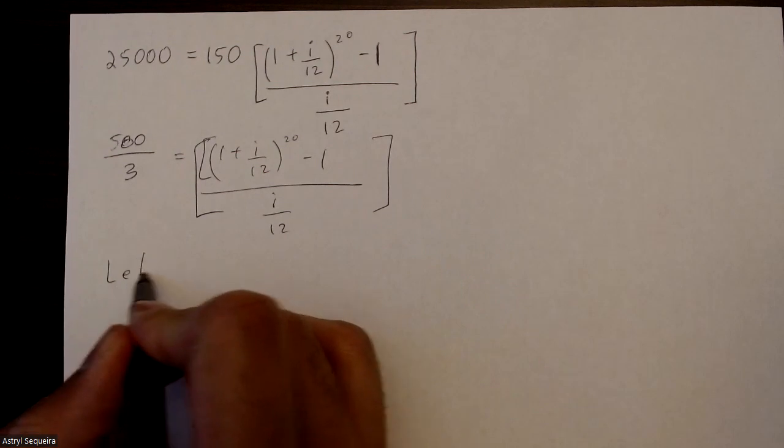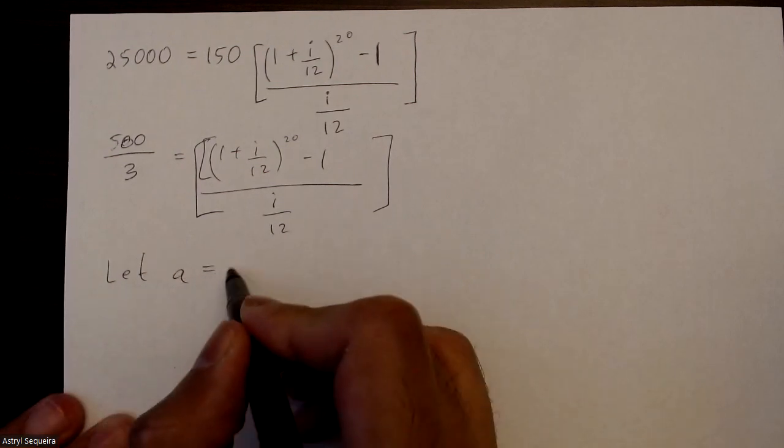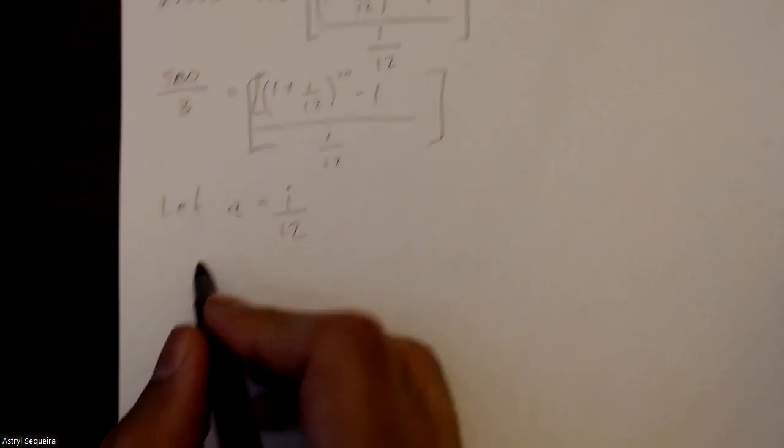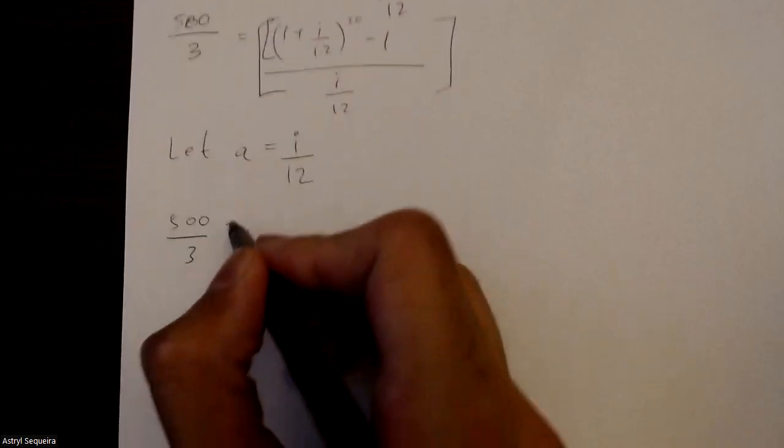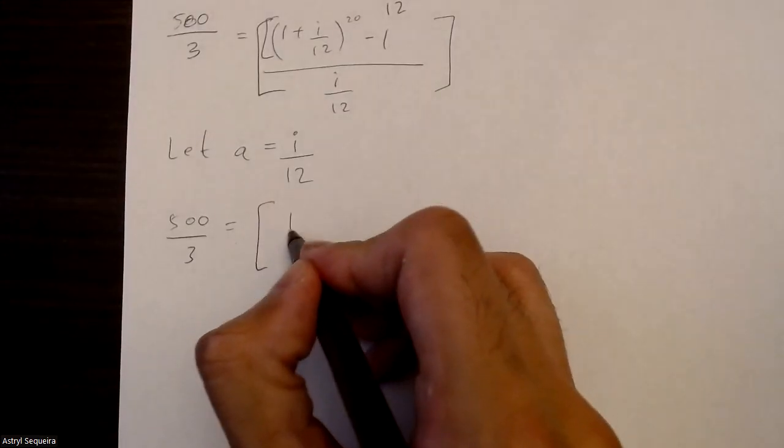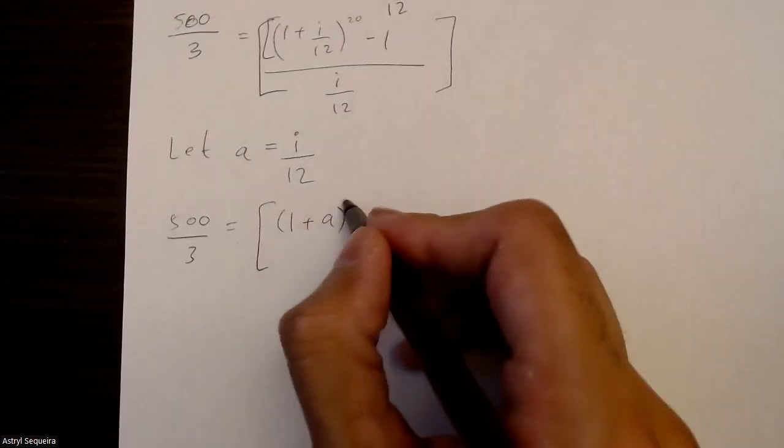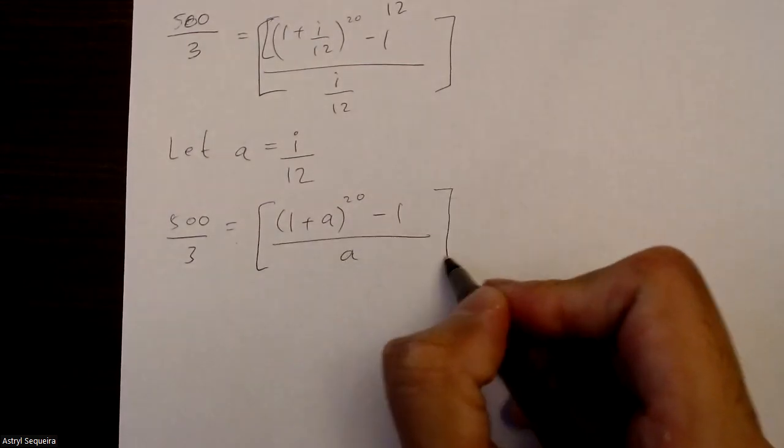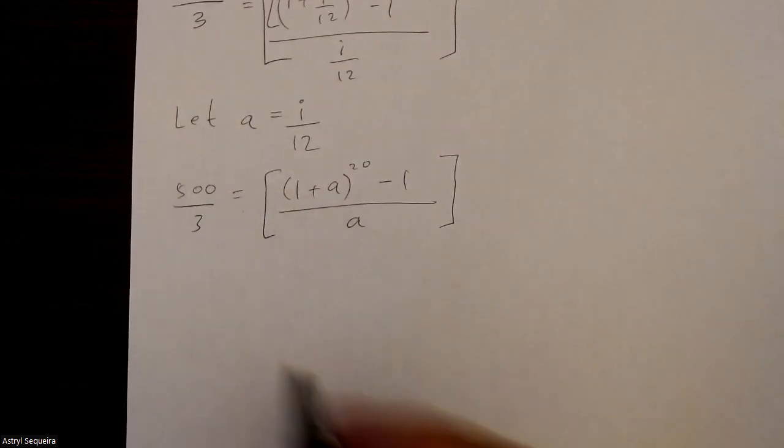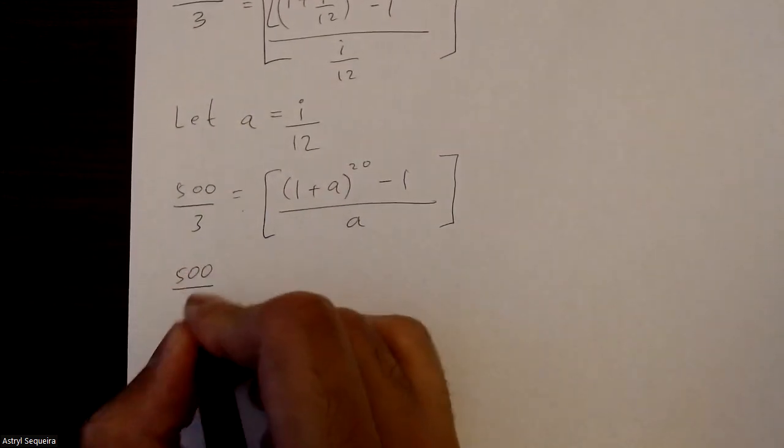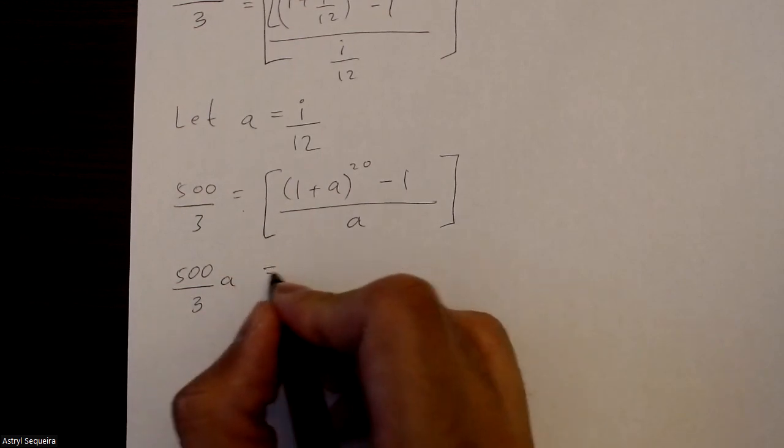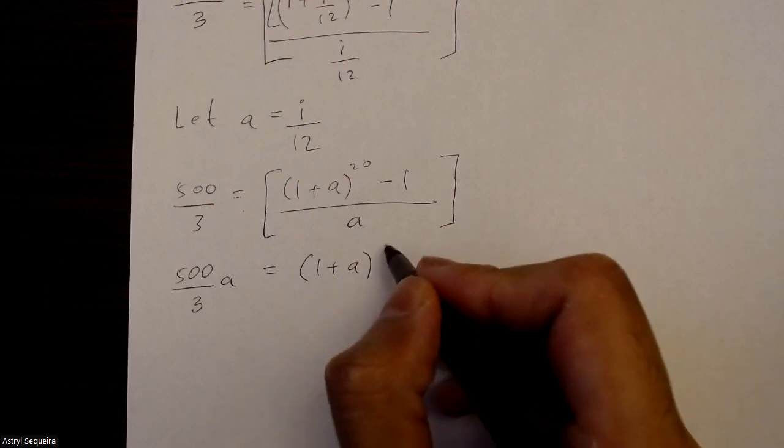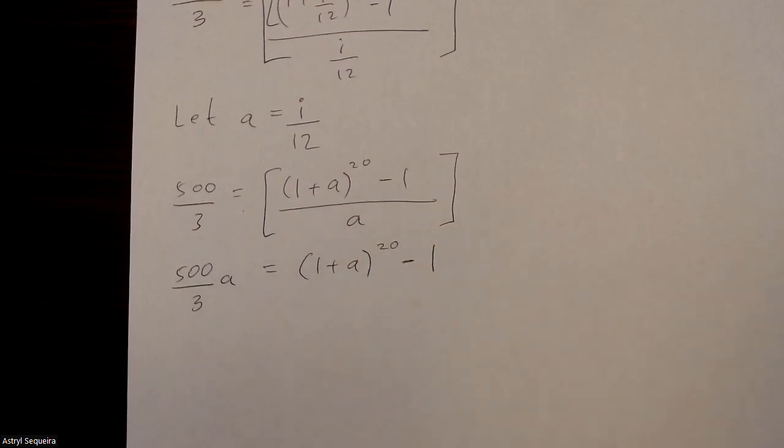I'm going to do a bit of a substitution to make this easier. So just let a equal to i over 12, or you can use any letter. So now I have 500 over 3 equals 1 plus a to the exponent of 20 minus 1 divided by a. And now I'll multiply the a over to the other side. So 500 over 3a equals 1 plus a to the power of 20 minus 1.